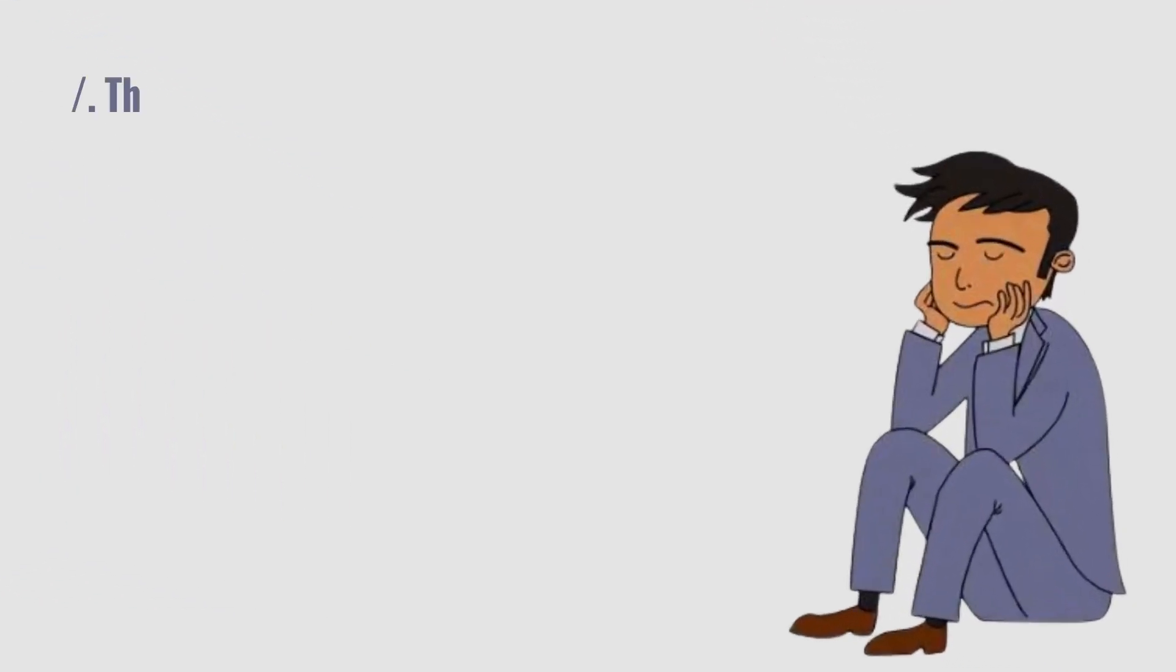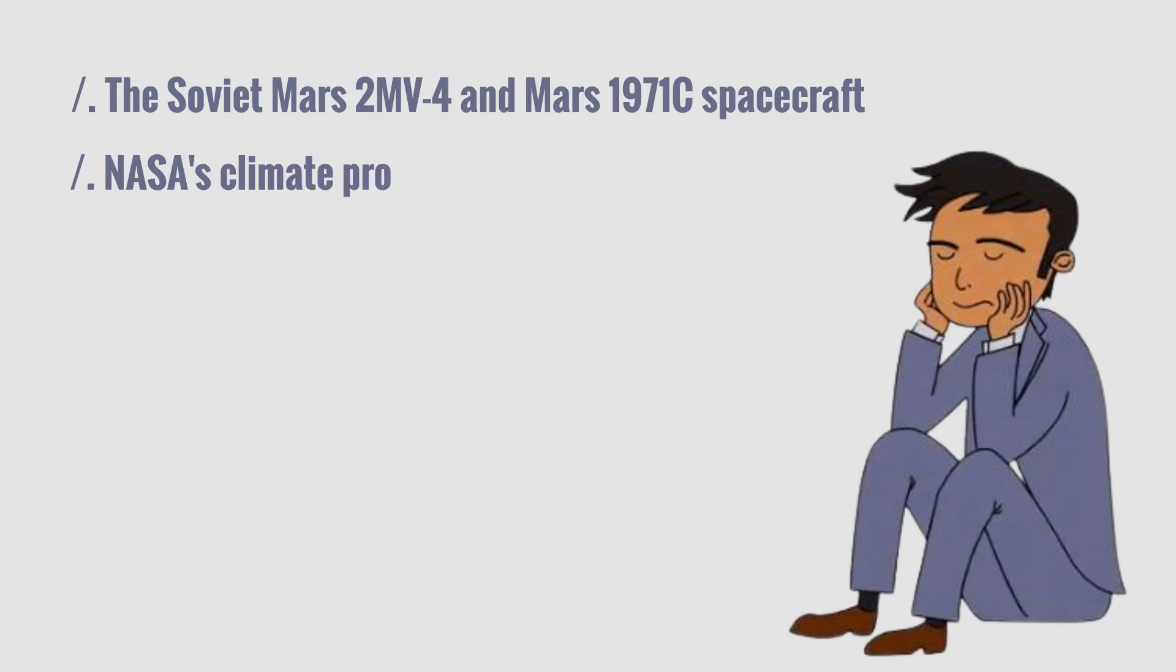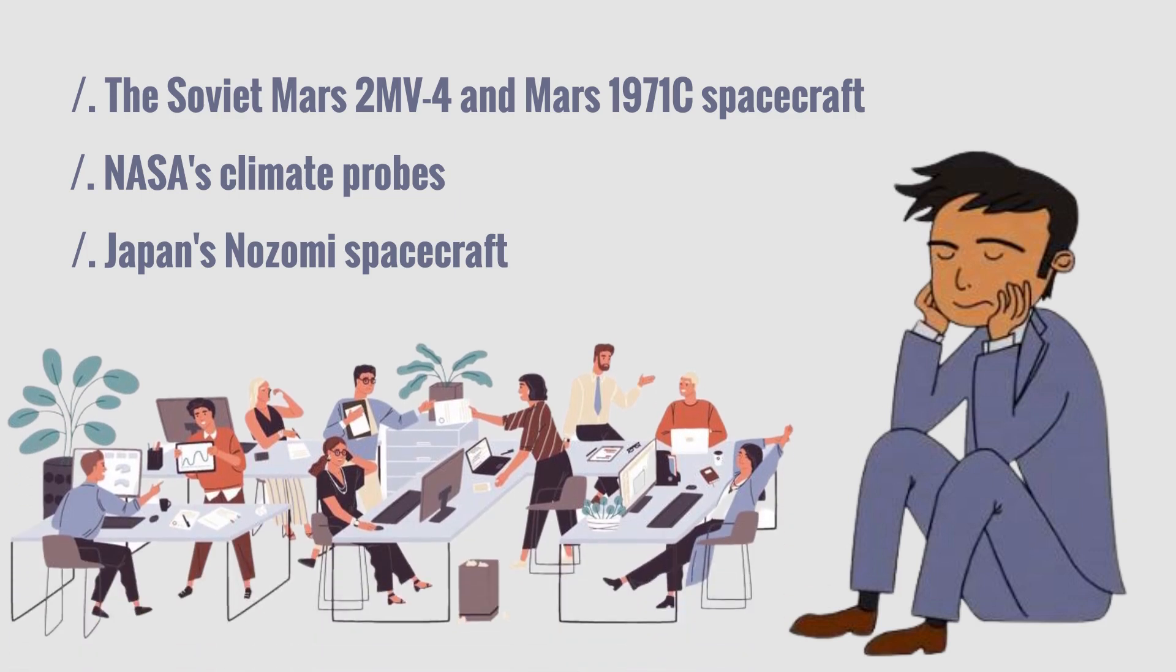For example, the Soviet Mars 2 MV-4 and Mars 1971 C spacecraft had technical problems and could not get to Mars, or NASA's climate probes or Japan's Nozomi spacecraft flew to Mars, but due to a programming error that came too close or did not guarantee the required speed, resulting in a failed landing.